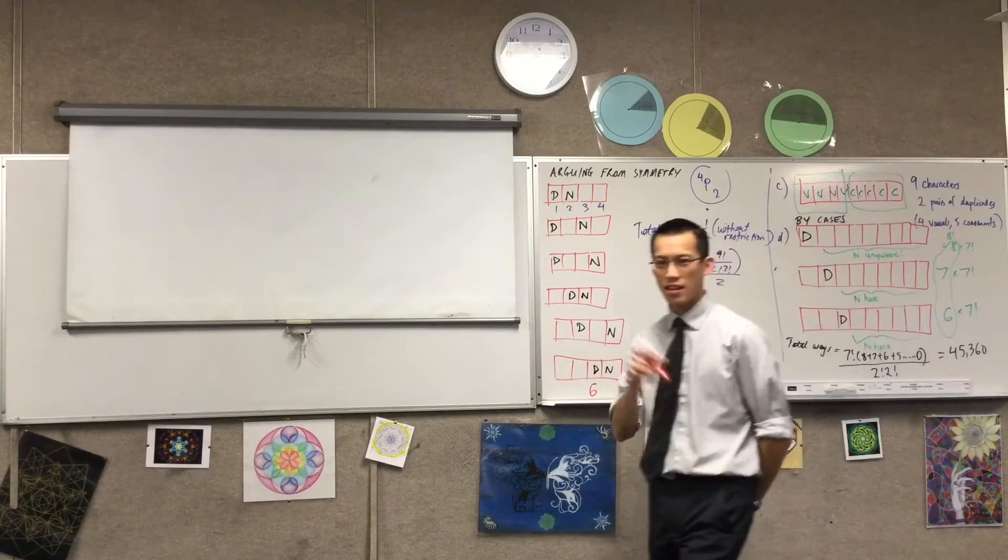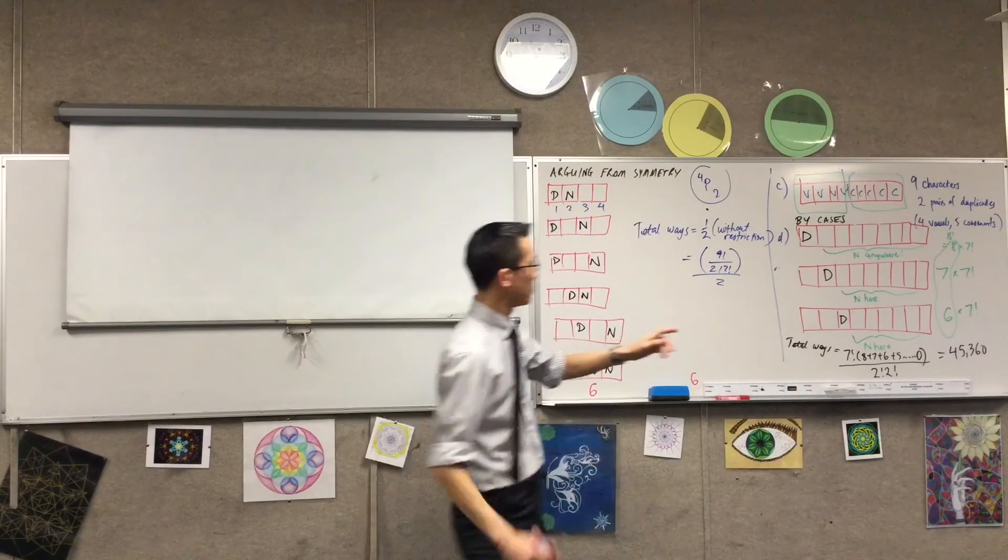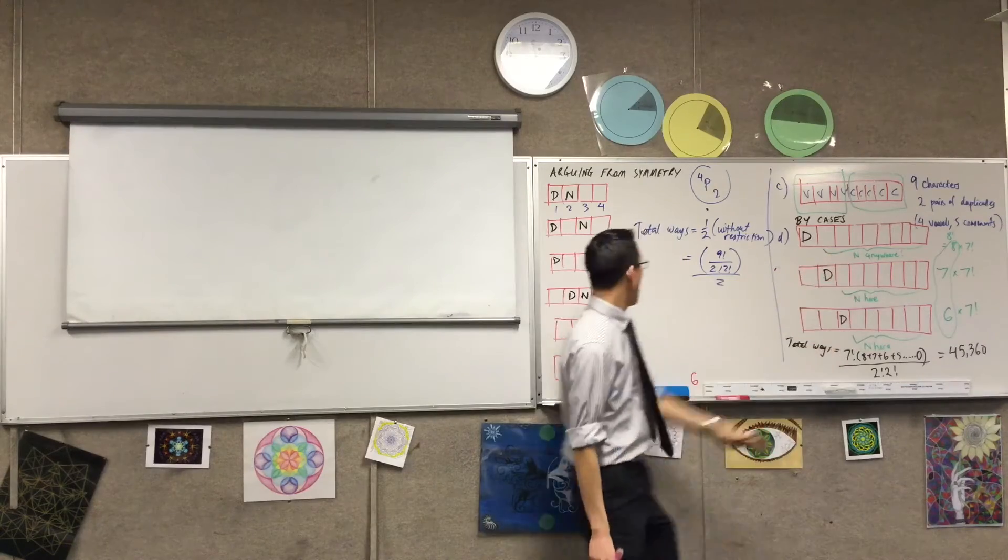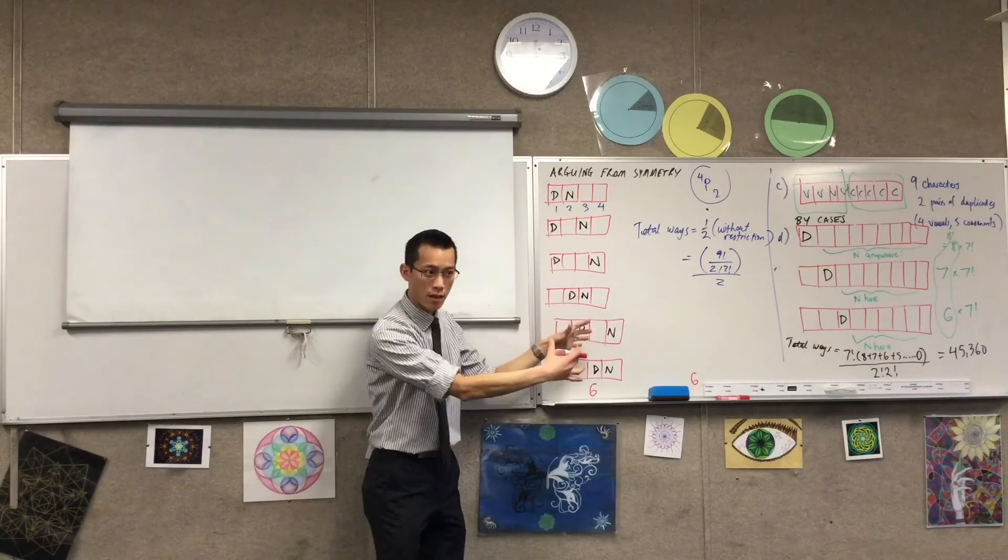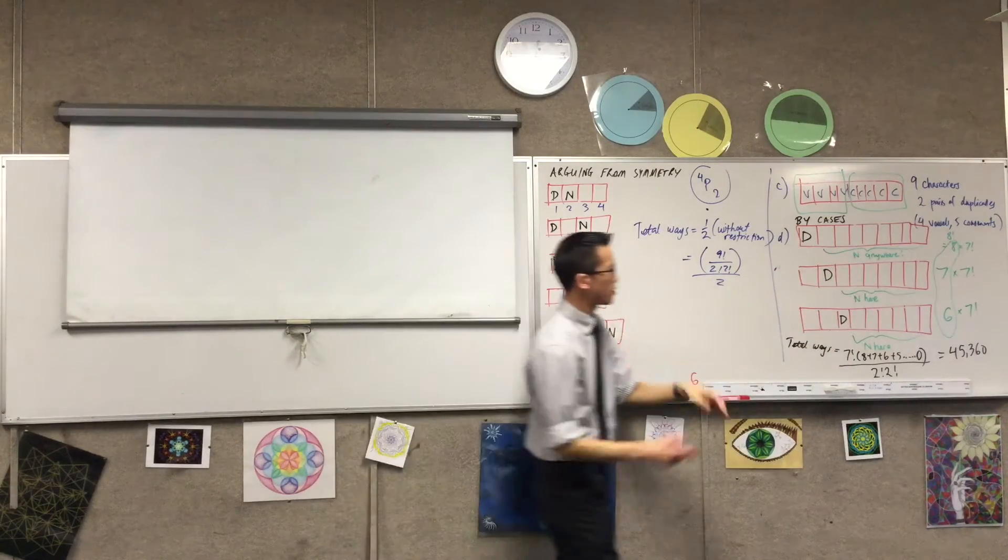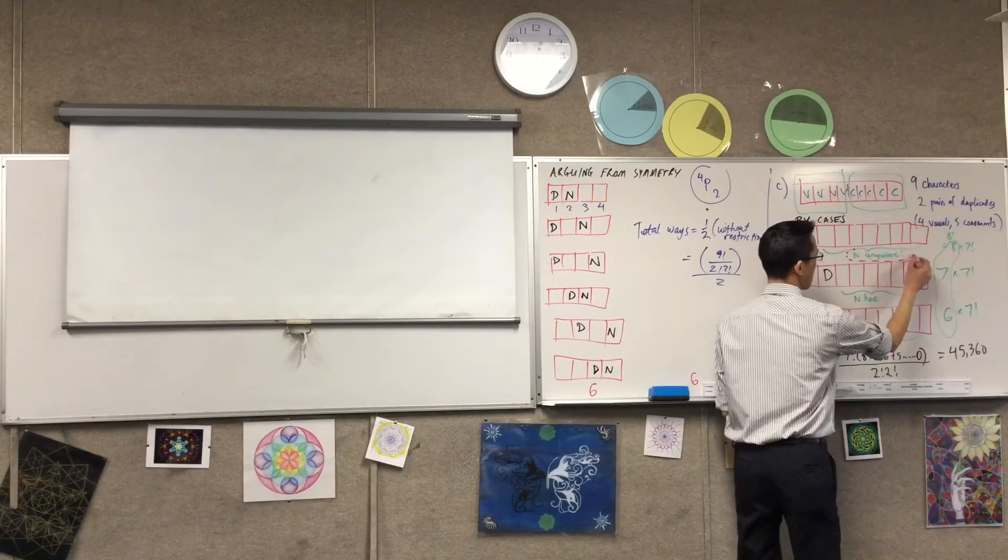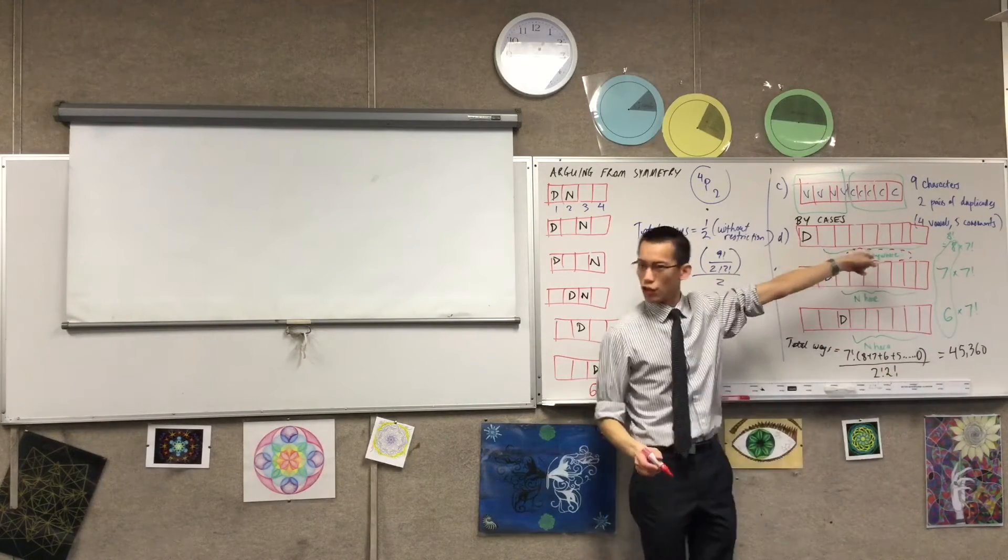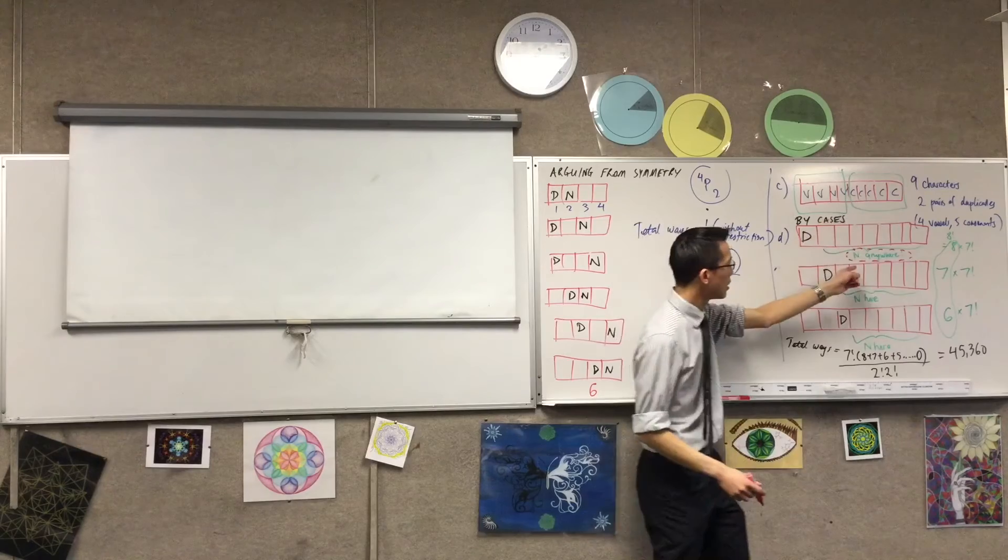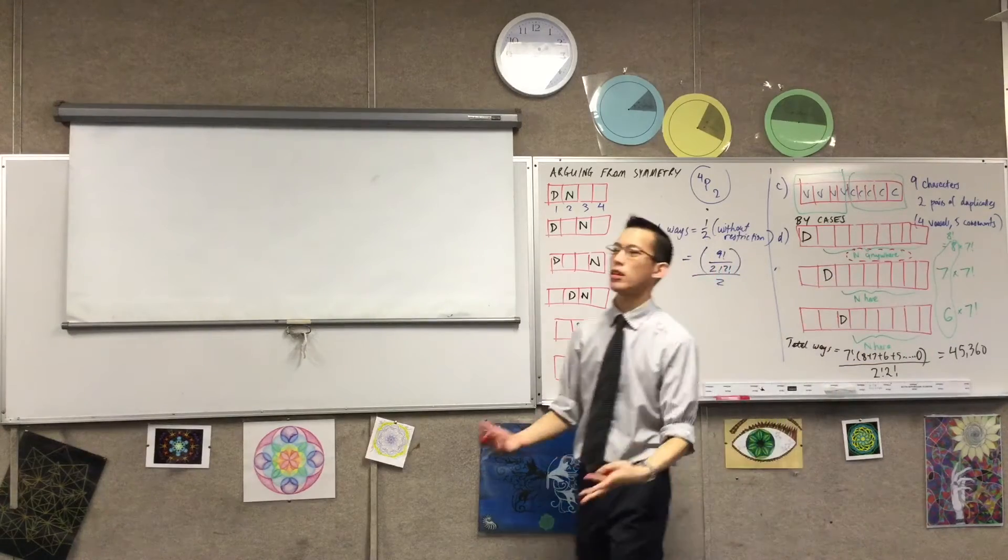Approach number three is to think about, like we thought first about the letter D, right? And then here we tried to think about them together. Did you notice, like when I said this, this bit here, for case one over here, once you place the letter D, N can be anywhere. It's kind of like one of the other guys, okay?